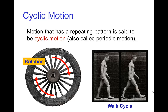There are lots of examples, such as a wheel that's turning — it completes one cycle when it completes an entire turn. Walking is also cyclic motion, so it repeats after two steps.